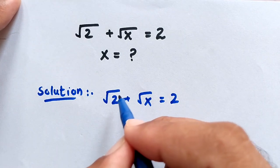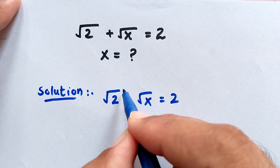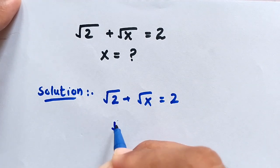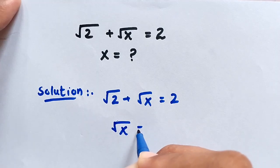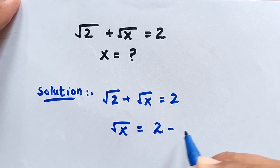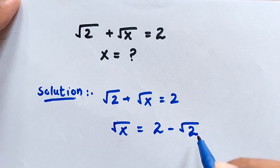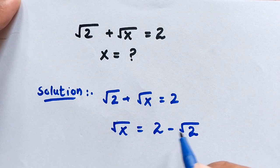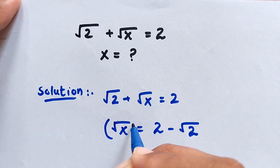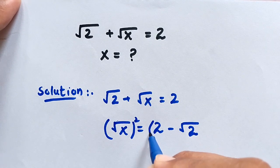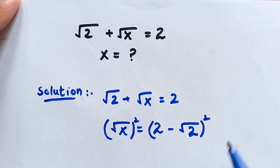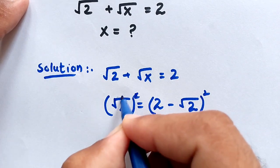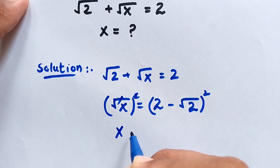To solve this question, we move the square root of 2 to the right side, so this becomes: square root of x is equal to 2 minus square root of 2. Now we square both sides — this square cancels with this square root — so x is equal to (2 minus square root of 2) squared.